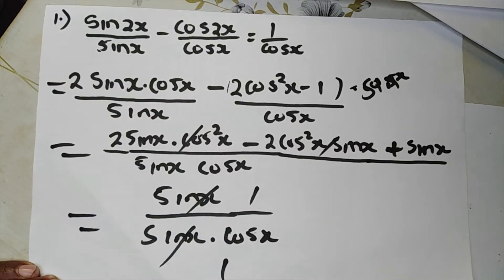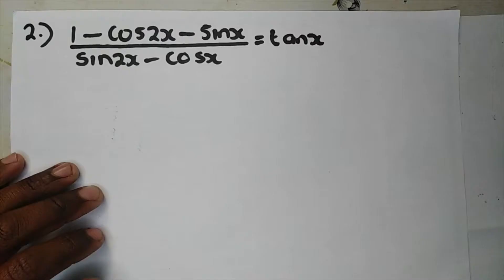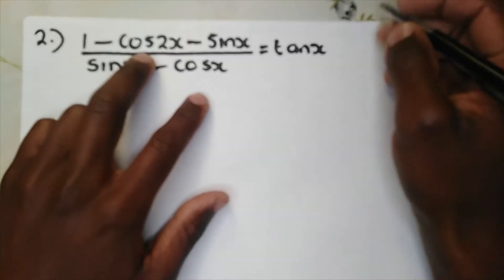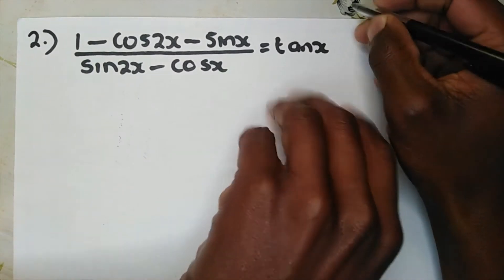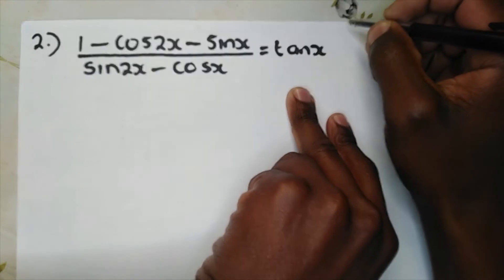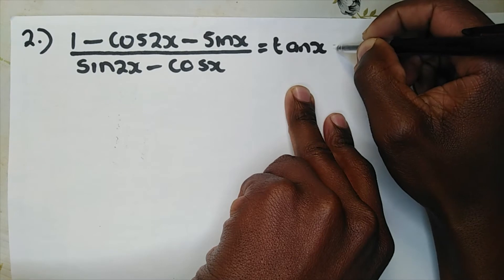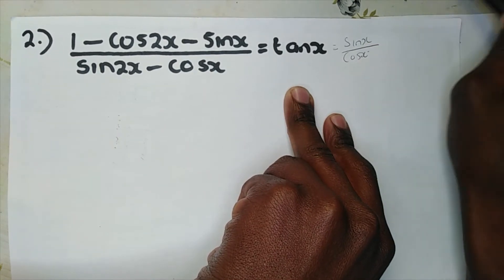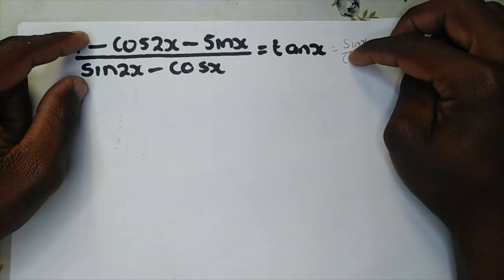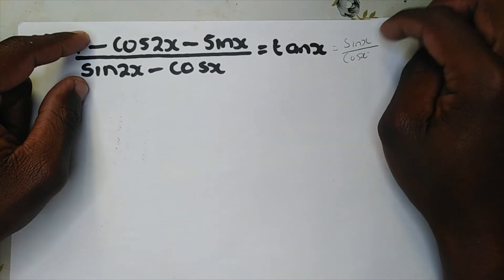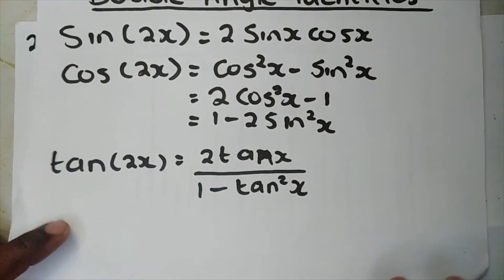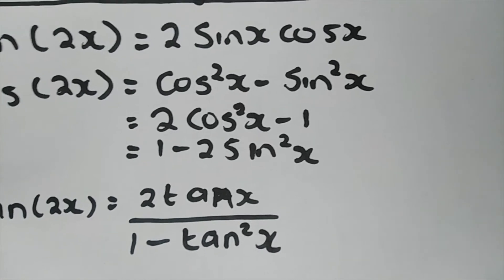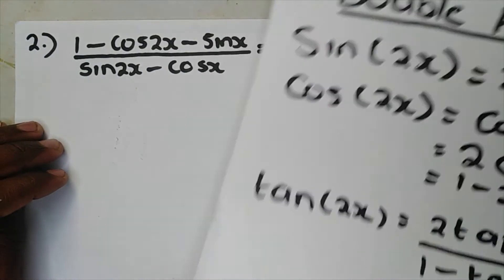This is our final answer — simple! Okay guys, let's move to the next question. Our next question is: 1 minus cos 2x minus sin x, all over sin 2x minus cos x, equals tan x. As we all know, tan x is equal to sine x all over cos x. Bear in mind that sine squared x plus cos squared x equals 1, so look at the double angles carefully to know which one to use, especially for cos 2x.